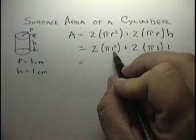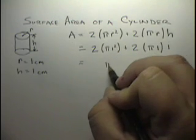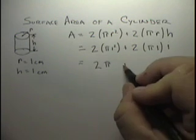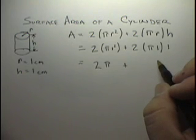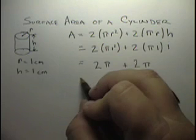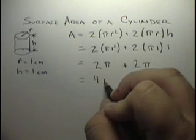Pi times 1 squared, 1 squared times 1 is 1, so 1 times pi is pi, so that's 2 pi, plus pi times 1 is pi, times 1 is pi again, so that's 2 pi. So we can solve for this, and that would be equal to 4 pi.